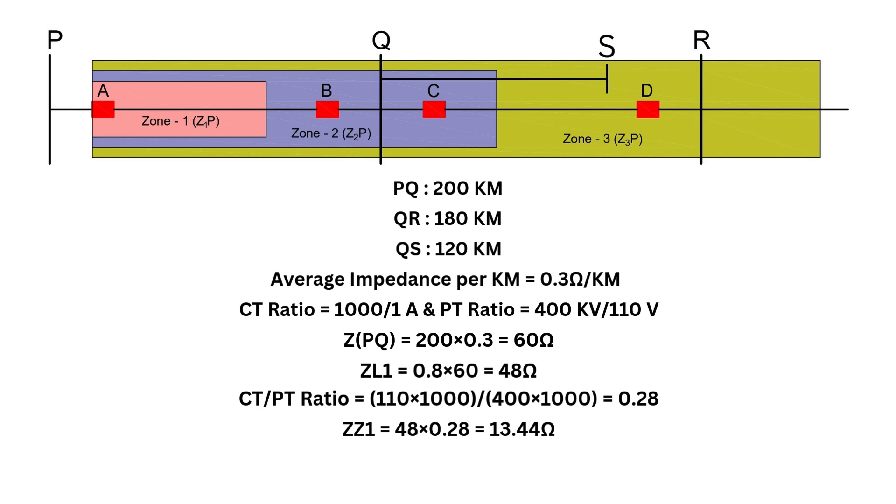So, the zone 1 setting for relay A will be 13.44 ohms. If the relay senses an impedance less than this, it will trip the breaker. The time setting for zone 1 is instantaneous because we want to isolate the fault immediately. Now you might wonder, why don't we set zone 1 to 100% of the line length?